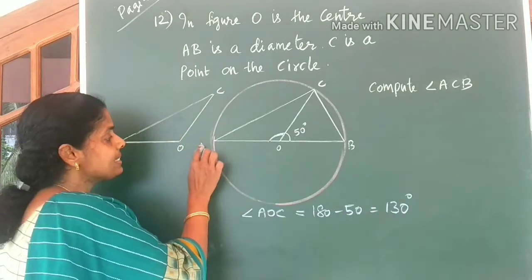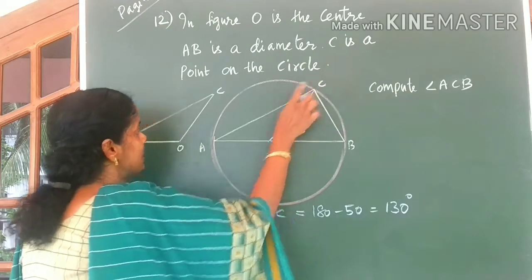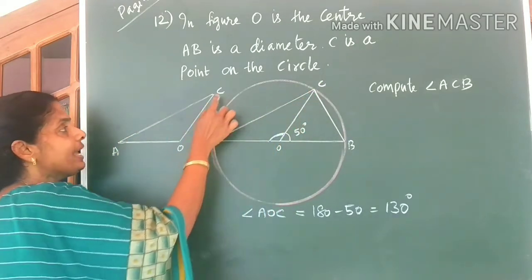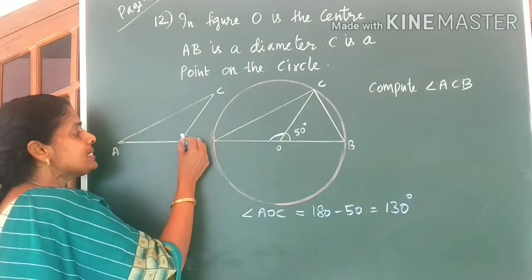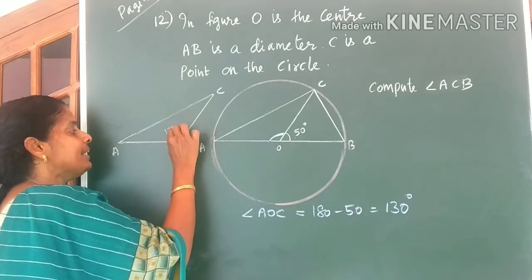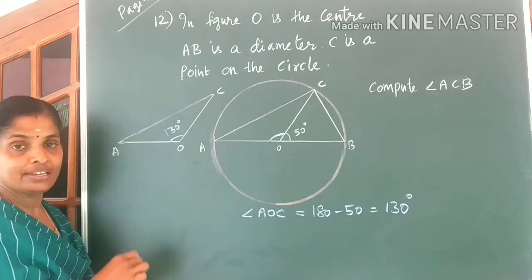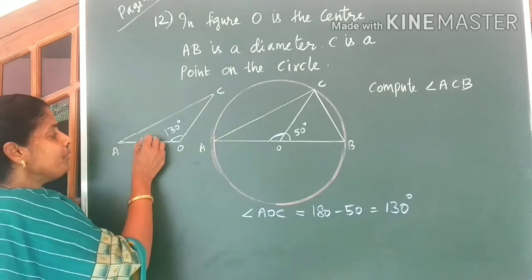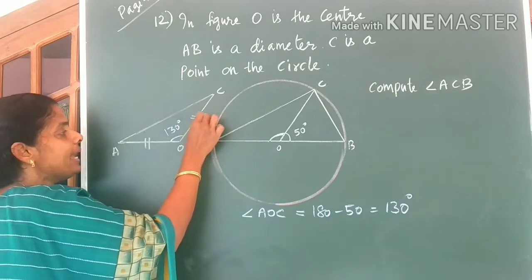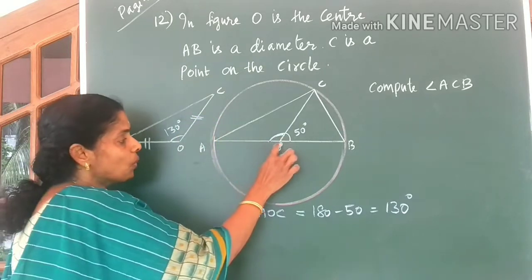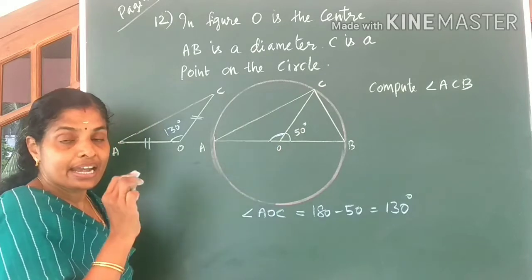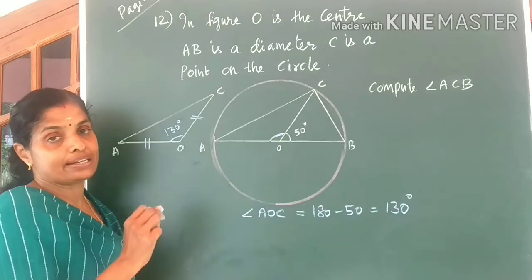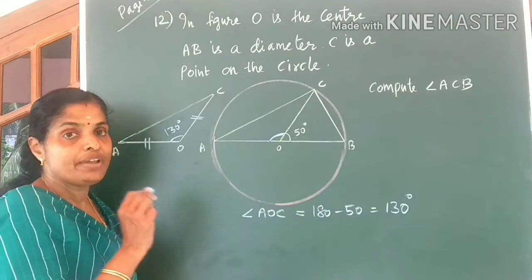Now look at triangle AOC. I have drawn triangle AOC separately. We know this angle to be equal to 130 degrees. Isn't it? Now what do you know about OA and OC? OA and OC are the radii of the same circle. So they are always equal. Hence, triangle AOC is an isosceles triangle.